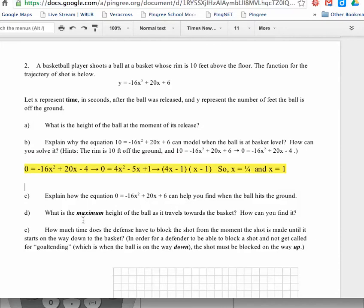Then D, what is the maximum height of the ball as it travels towards the basket? You could go up to your original equation, way up here, and do the minus b over 2a. And you'd have negative 20 over negative 32. And you could simplify that. We could also go to our calculator here.